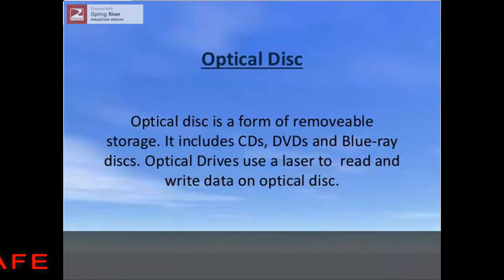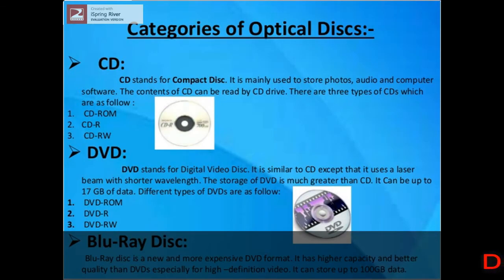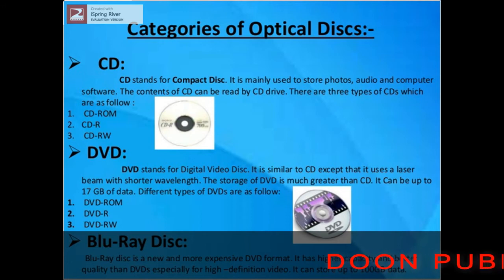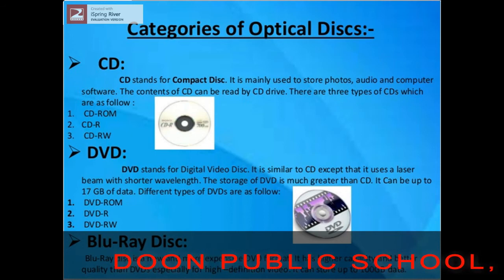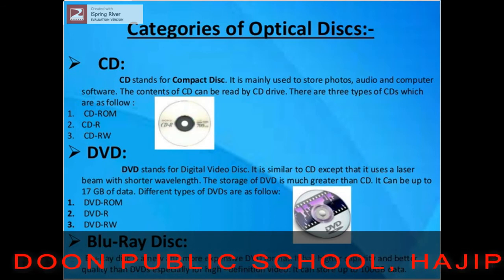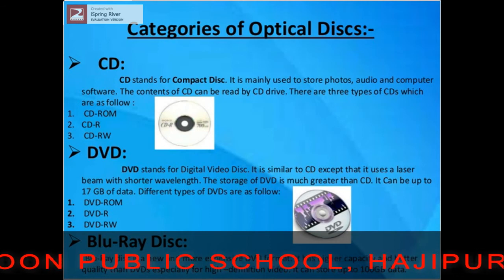Next, optical disk. It includes CDs, DVDs, and Blu-ray discs. CD stands for compact disk; it is a portable device that stores a large amount of data. DVD is similar to a CD but can store about 7 times as much data as a CD. Blu-ray disc has higher capacity and better quality than DVD and can store up to 100 GB of data.